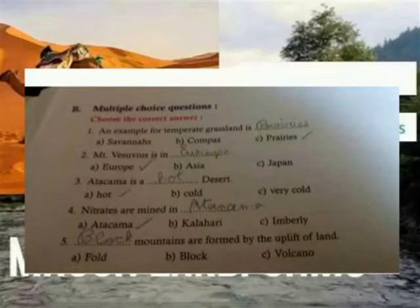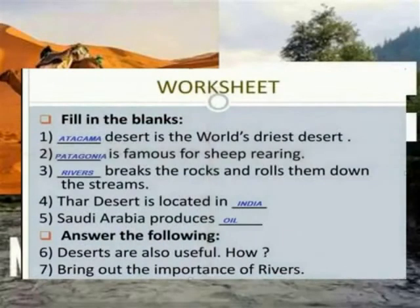Deserts are named — Atacama. Block mountains are formed by the uplift of land. Major landforms: Desert.